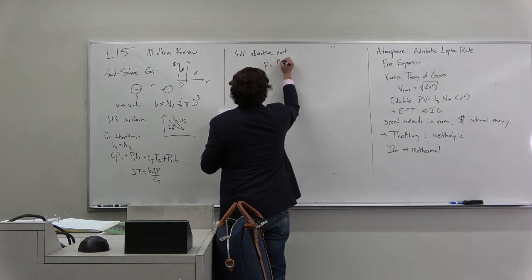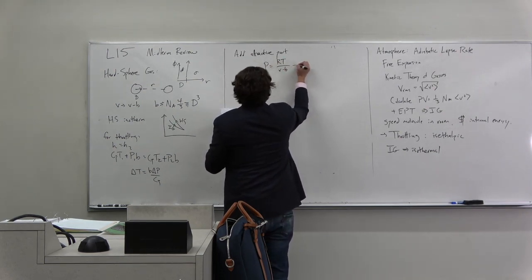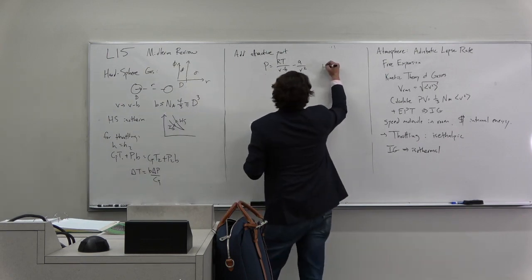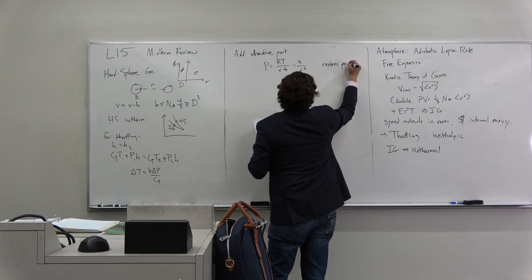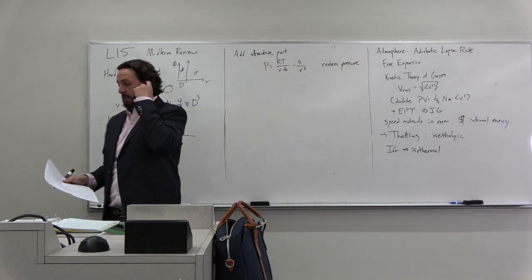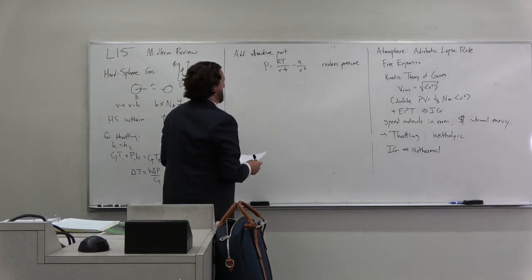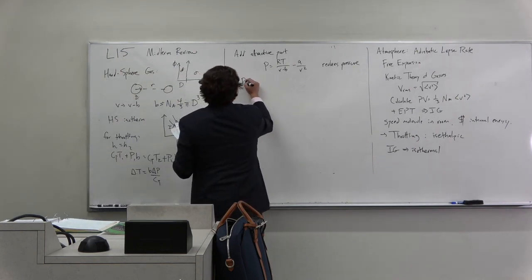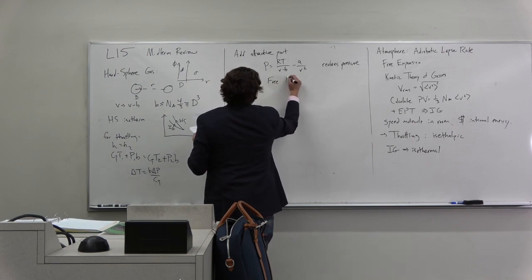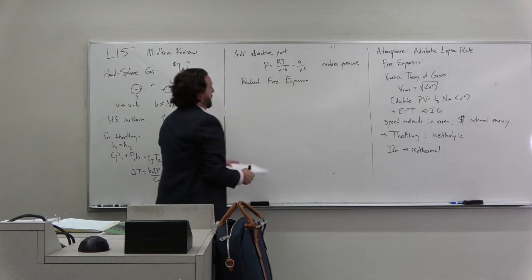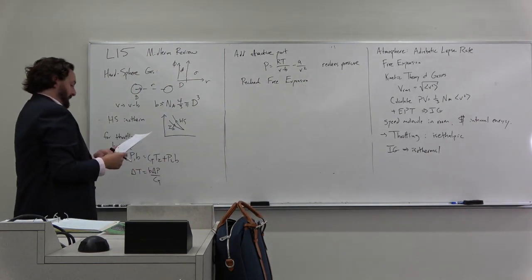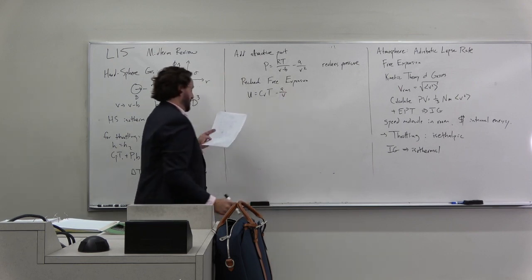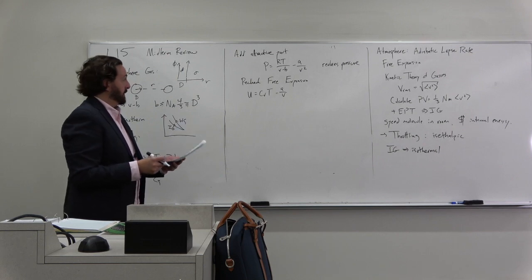We added the attractive part of our potential and rewrote RT as B minus B minus A over B squared. Check the units of A. Make sure you understand that this reduces the pressure, because the attractive interactions reduce the momentum, which reduces the kinetic energy, reduces the force on a wall, reduces the pressure. Then we rechecked our free expansion for a van der Waals gas.